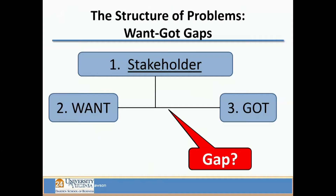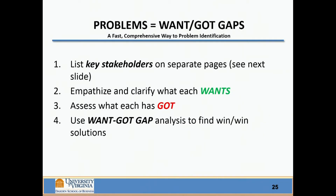It's a well-established process — a well-established way of going about trying to get at this issue of, from whose point of view do you want to identify the problems? One way to think about this is: could we list the key stakeholders in a situation, whether it's at a team, a division, or a corporate level? And I'll show that to you in a moment. Can you then identify and clarify what each of those stakeholders wants, and assess whether or not they're getting what they want?